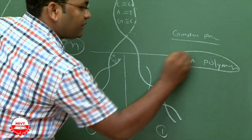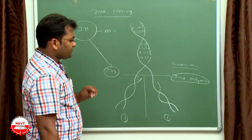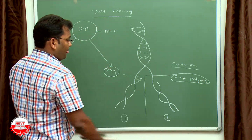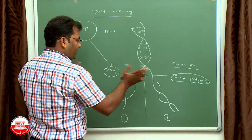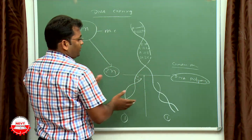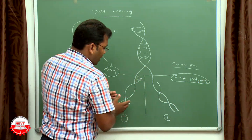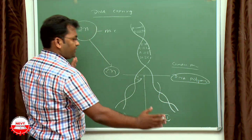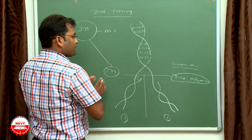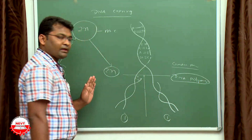DNA copying is a complex process carried out by enzymes like DNA polymerase. DNA polymerase is the enzyme that helps in DNA copying. You will learn in higher classes how the mechanism of DNA copying takes place — how one DNA produces 2 DNA.